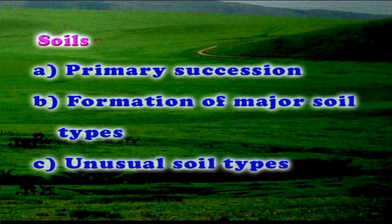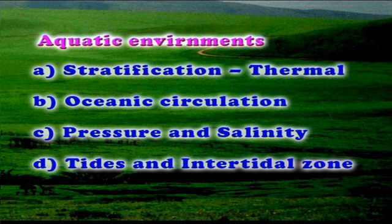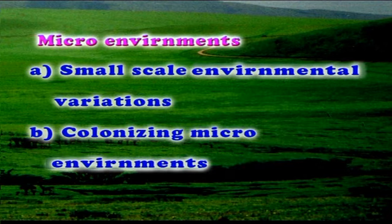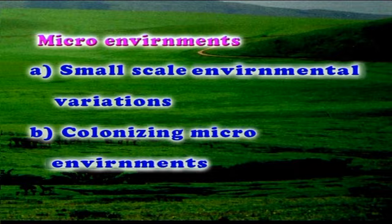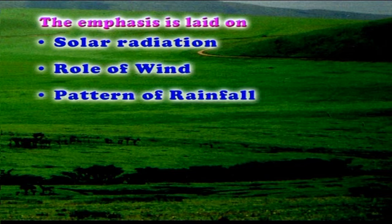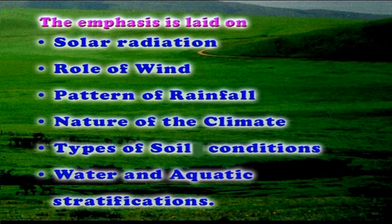The aquatic environments involve the study of stratification of water bodies with reference to temperature, oceanic circulation in the masses of oceans and seas, pressure and salinity variations in the seas and oceans, and the tide and intertidal zonal conditions of seas and oceans. The microclimate and microenvironments involve small scale environmental variations. Hence, biogeography attempts to study the limiting factors of ecosystems and habitat, with main emphasis on solar radiation, role of wind, pattern of rainfall, nature of climate and weather, types of soil conditions, and the availability of water and aquatic stratification.